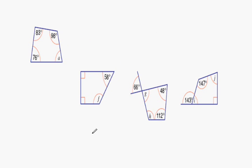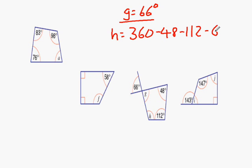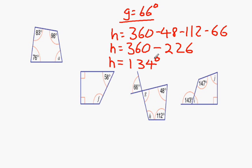As we can see, G is at an opposite angle, and that means it is 66 degrees. Now that we know that, we can figure out H by taking away 48 degrees, 112 degrees, and 66 degrees from 360. This can also be known as 360 take away 226 degrees. From doing this calculation, we can figure out that it is 134 degrees.